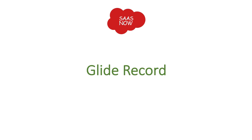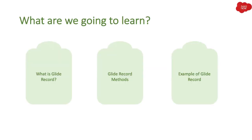In this session we are going to talk about GlideRecord. In our previous sessions we learned about client-side scripting, server-side scripting, business rules, client scripts, UI policy, and GlideSystem which you can write on the server-side. GlideRecord is another API — a really important object in ServiceNow — because most developers utilize this API when doing coding in ServiceNow. We'll cover what GlideRecord is, its methods, and practical examples.